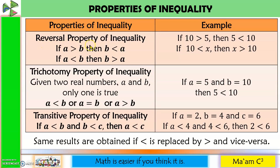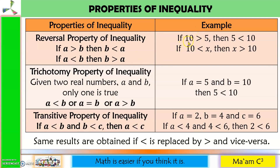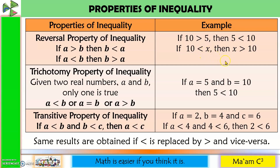The reversal property means A and B may be swapped. Remember the technique: Pac-Man eats the bigger number. Here, Pac-Man eats 10, so when you reverse, make sure Pac-Man is still eating 10. This is also applicable when you want to place the variable on the left side when it is initially on the right side.